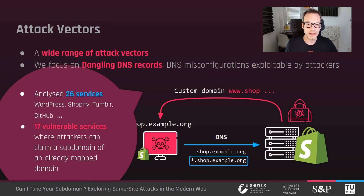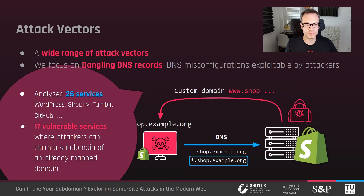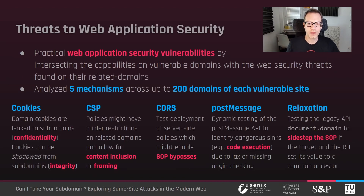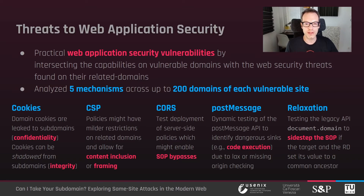Overall, we analyzed 26 third-party services and identified similar vulnerabilities in 17 of them. We reported this vulnerability to Shopify, who acknowledged the problem and awarded us with a bounty of $1,000. Concerning the threats to web application security, we studied the security implications of five different web mechanisms. We analyzed their deployment on the subdomains of vulnerable sites and based our security evaluation on the capabilities granted by the specific attack vectors.